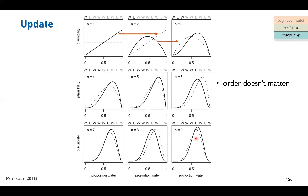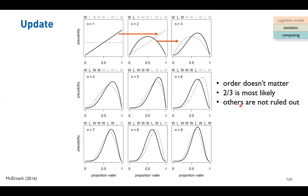Another point not directly illustrated: the order doesn't matter. If you always observe six water out of nine experiments, no matter what sequence the water-land results appear in, you will always end up with the same final posterior curve. The intermediate steps differ between different orderings, but the final result is always the same when the total count is identical.